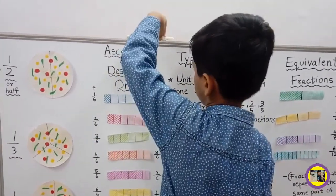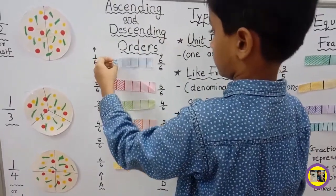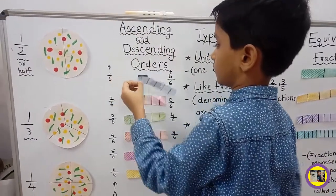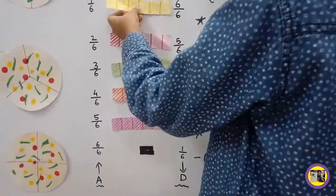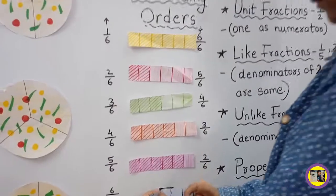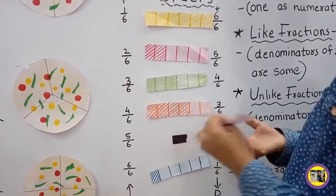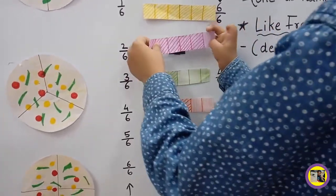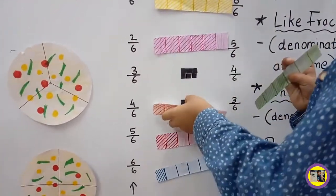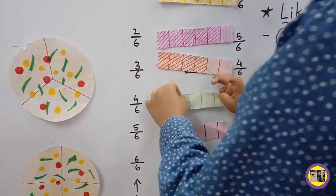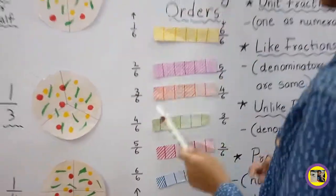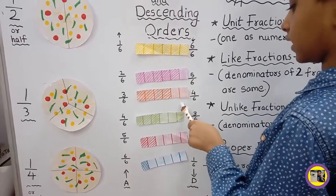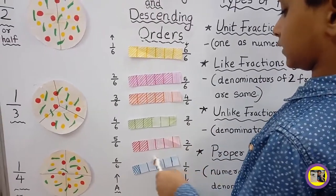Now let's arrange in descending order. This is arranged in descending order: 6 upon 6, 5 upon 6, 4 upon 6, 3 upon 6, 2 upon 6, and 1 upon 6.